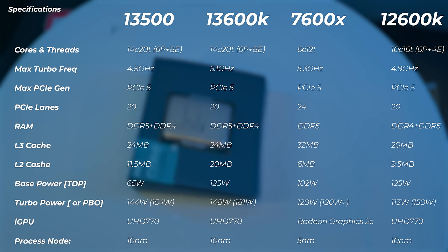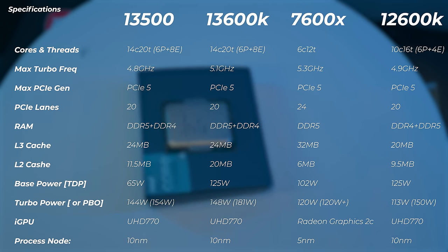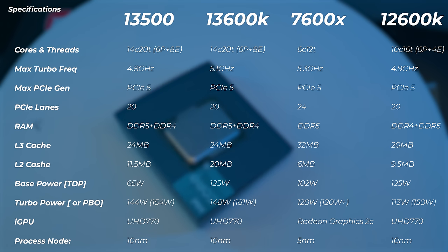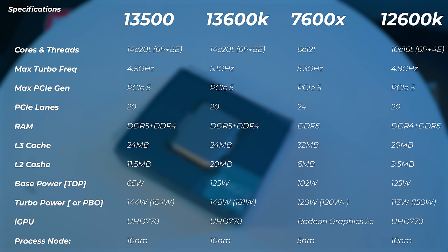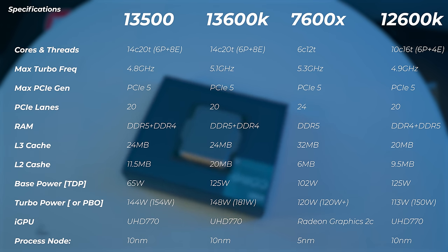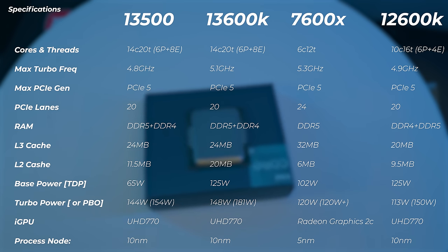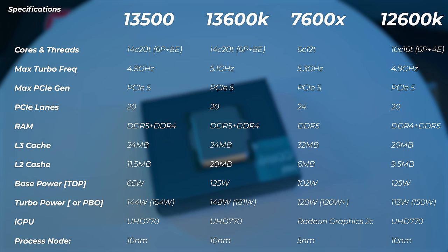The max turbo frequency on the 13500 is 4.8 GHz — the lowest of this group. The 13600K is 300 MHz higher, the 7600X is almost half a gigahertz higher, and even the 12600K is higher at 4.9 GHz. PCIe lanes and DDR support are exactly the same on 12th and 13th gen — 20 lanes with DDR5 and DDR4 support.